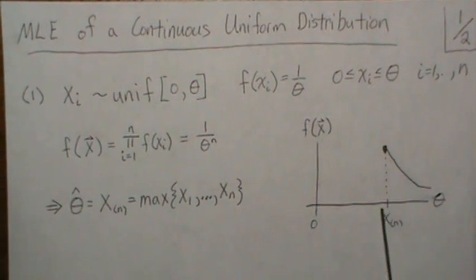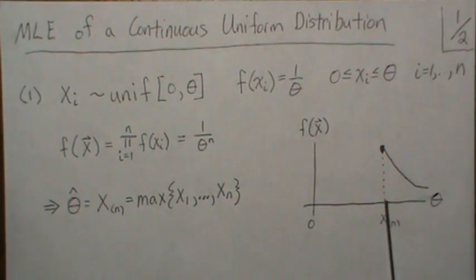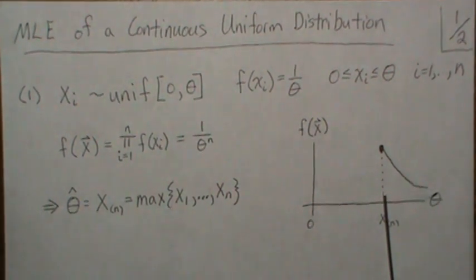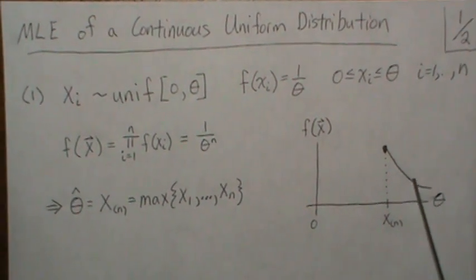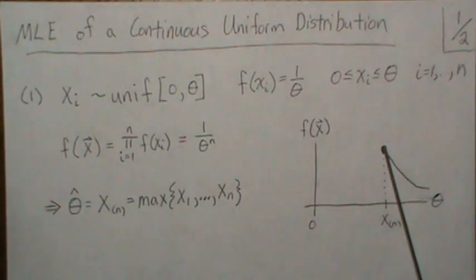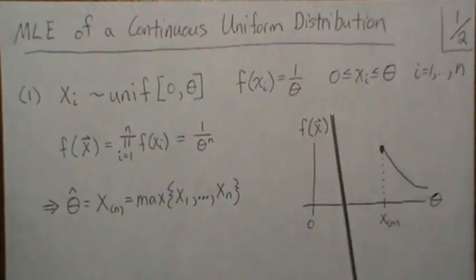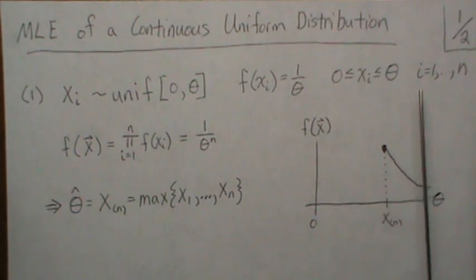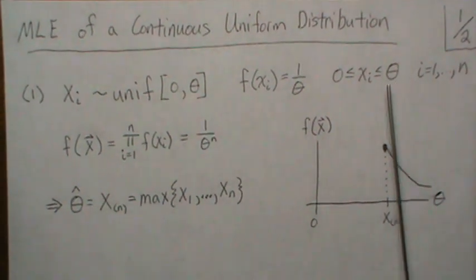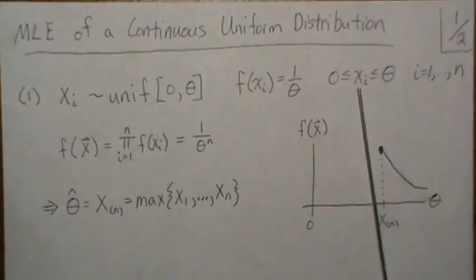We have our data points somewhere on here, and there's our largest data point. Now when we plot this, it looks like this all the way up to that largest data point because every Xi must be less than or equal to theta.